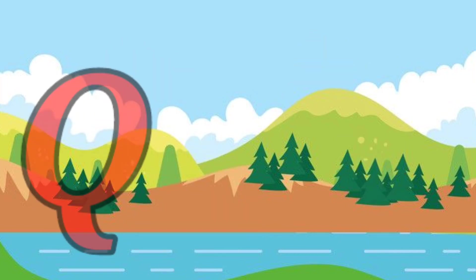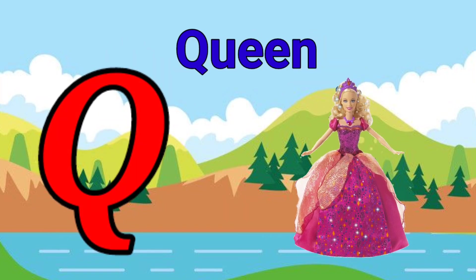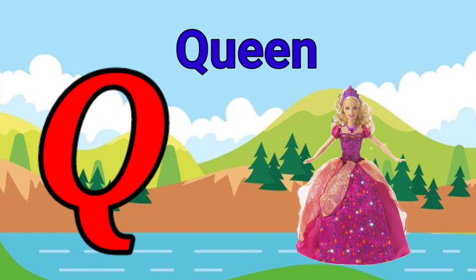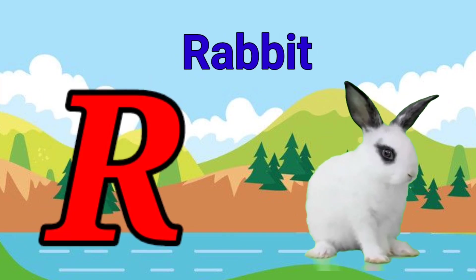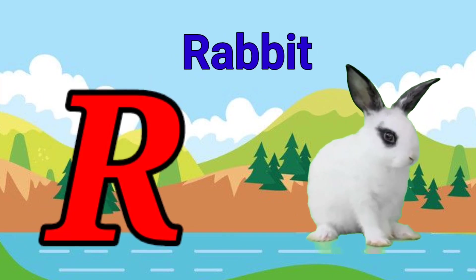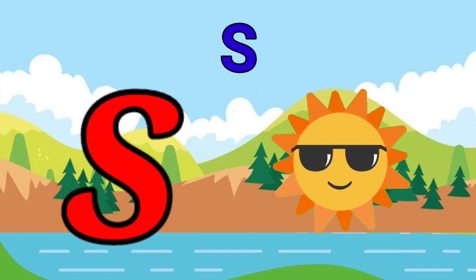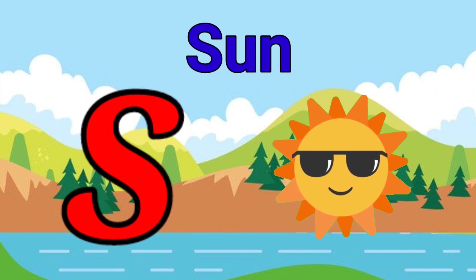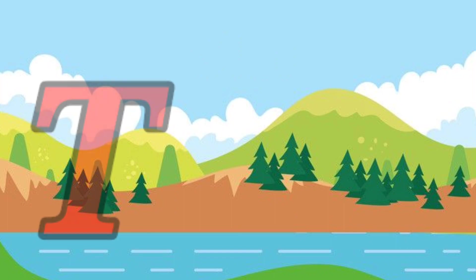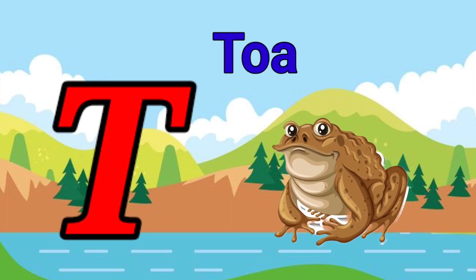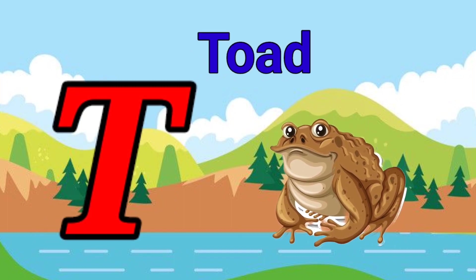Q is for queen, q-q-queen. R is for rabbit, r-r-rabbit. S is for sun, s-s-sun. T is for toad, t-t-t-toad.